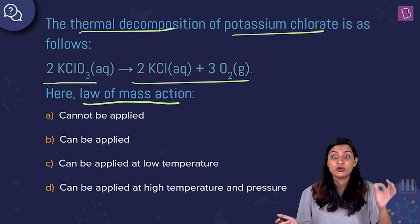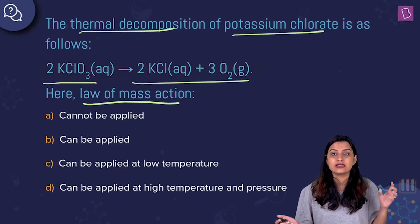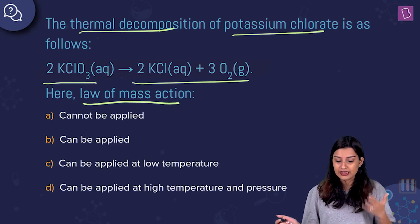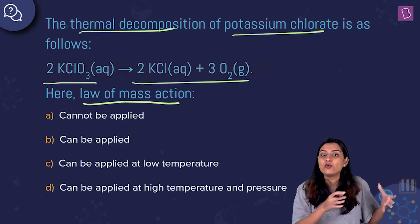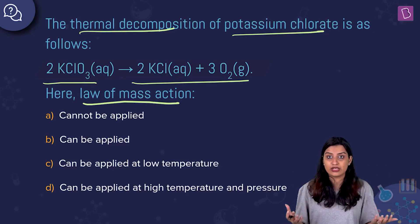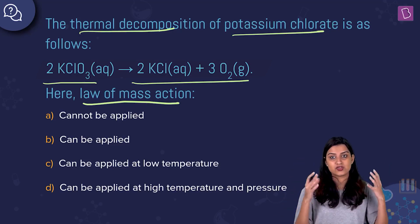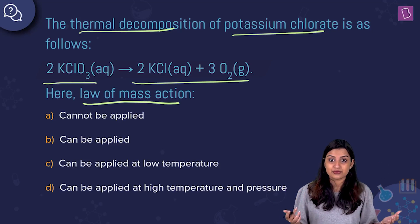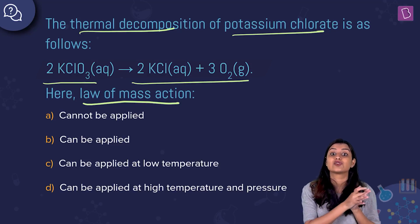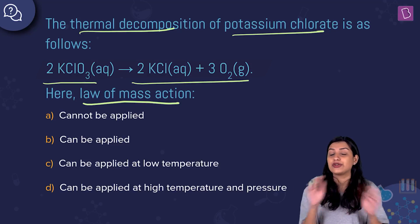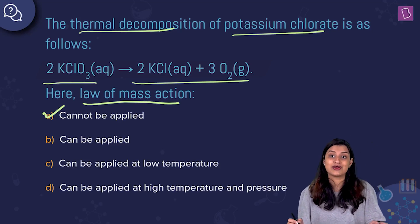We study law of mass action in chemical equilibrium, which means the fundamental requirement for applying this law is that the system has to be in equilibrium. Here you don't have a backward reaction, you only have the reaction moving in the forward direction, which means there is no equilibrium for the system, which means you cannot apply law of mass action. Option A, cannot be applied, is the right answer.